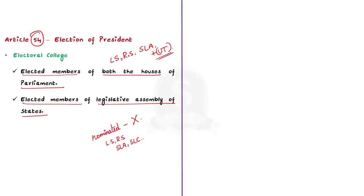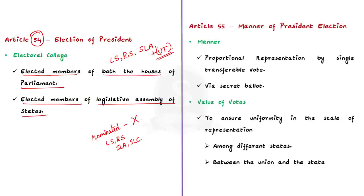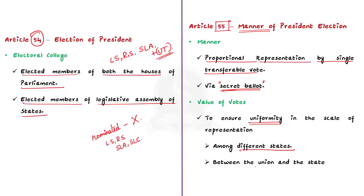We finished seeing Article 54. Now let us see the next article. Article 55 deals with the manner of presidential election. It says that the election of President shall take place in accordance with the system of proportional representation by means of single transferable vote. The voting of the presidential election shall take place by a secret ballot. Additionally, this article tries to ensure uniformity in the scale of representation among different states, and also tries to ensure parity in representation between the union and the states.